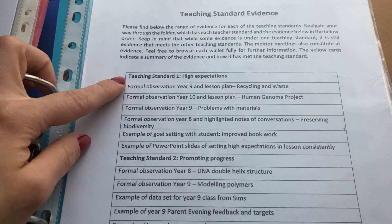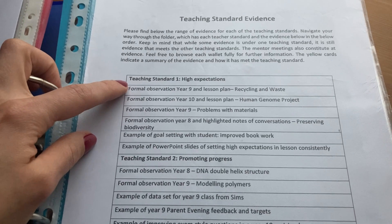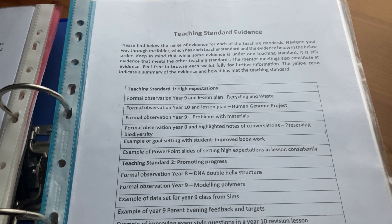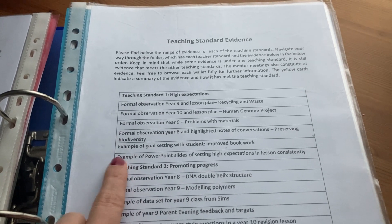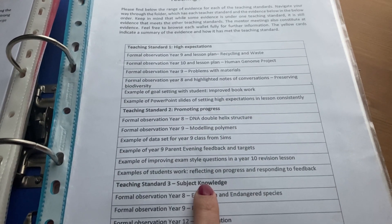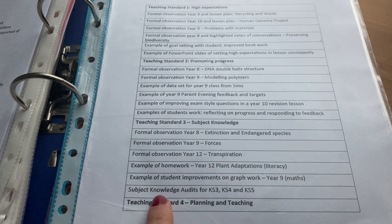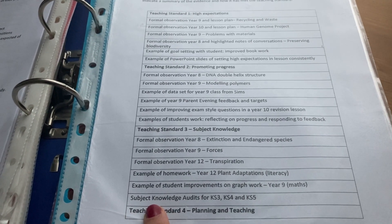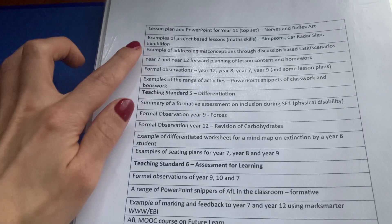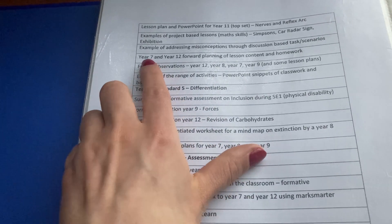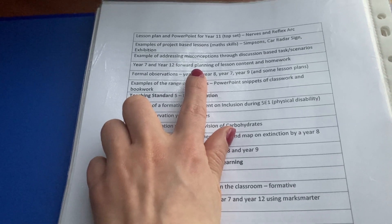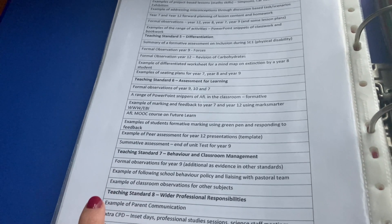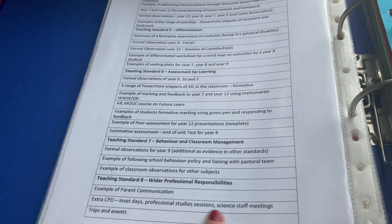From the evidence I've chosen, a lot of it relies on formal observation notes and lesson plans. I've been really specific with what year group it was and the title, to show a range of different topics and sciences but also different key stages. I've also included examples of student work, examples from different PowerPoints and resources that I made, and different audits to improve my subject knowledge as a measure of my progress. I've also included medium-term plans, forward planning, formal assessments, certificates of courses I completed, marking, emails, and extra CPD notes.